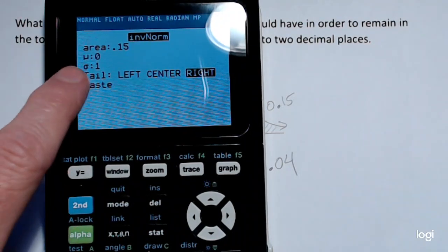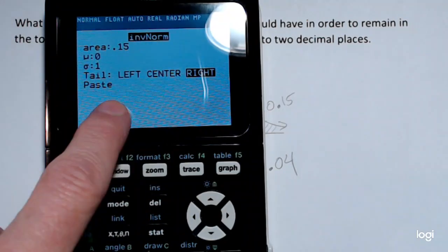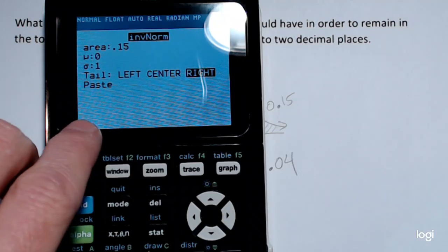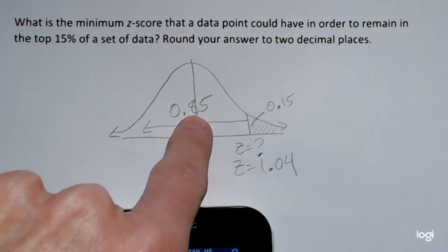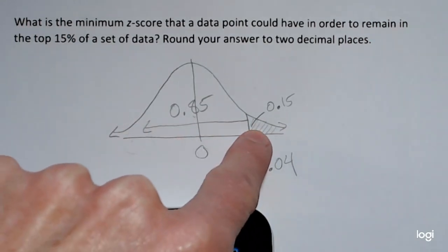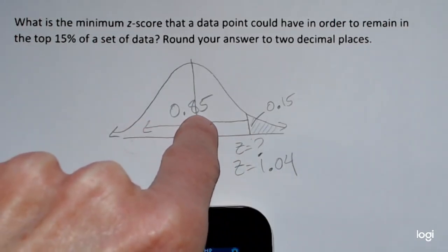And you want to put in the area. Now, this is a newer calculator. The older calculators have you putting in a cumulative area left to right. So if you're using an older TI-84, you're going to need to put in 0.85.